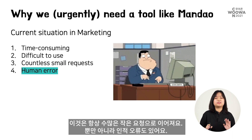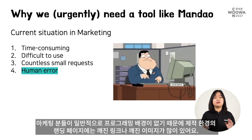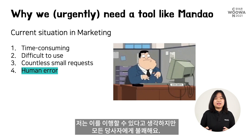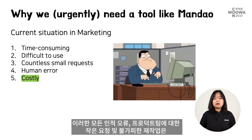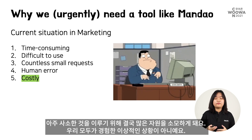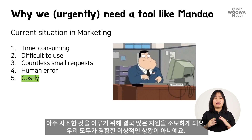That inevitably leads to tons of small requests. And don't even get me started on the human errors. Since marketing people usually don't have a programming background, there are many broken links and broken images in the landing page on the production environment. That's understandable, but nevertheless frustrating for all involved parties. Ultimately, all these human errors and small requests to the product team are unavoidable. The rework will eventually cost a lot of resources to achieve something quite trivial — a landing page.